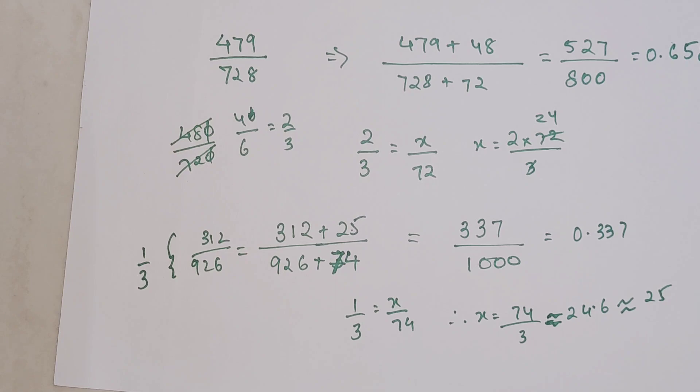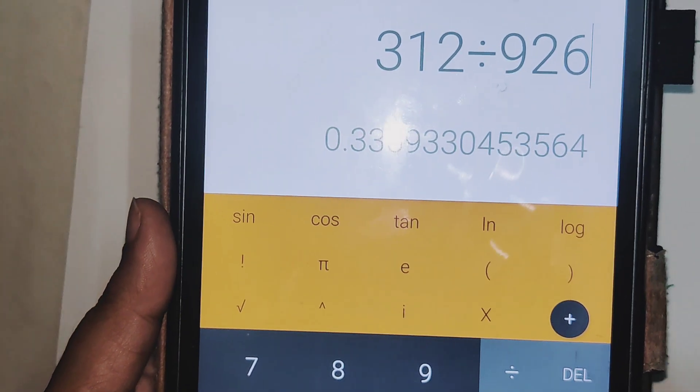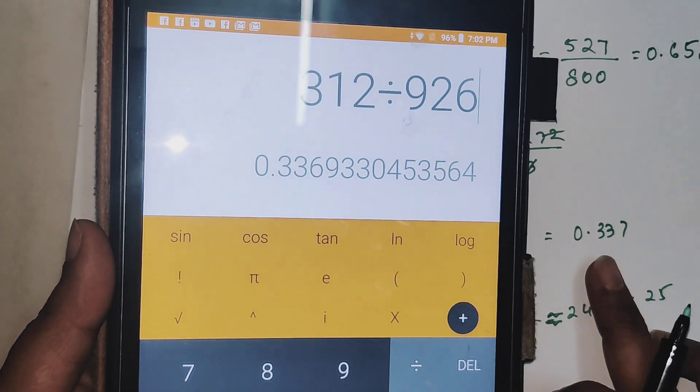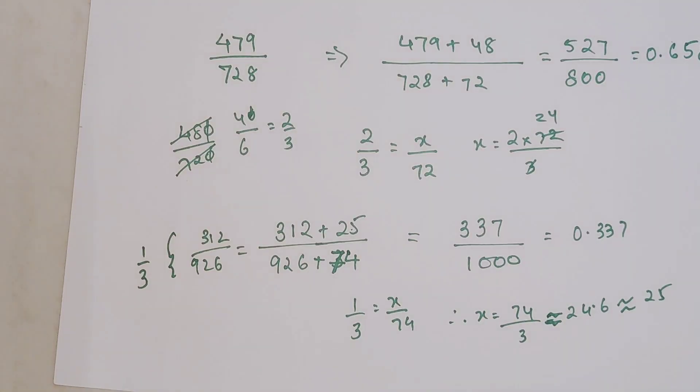We are going to do 312 divided by 926. So see, 3, 3, 6, 9, and we are getting 3, 3, 7. So you see, a little bit of adjustment even in the ratios is not a harm.